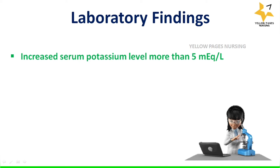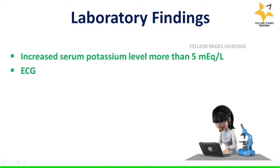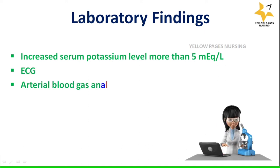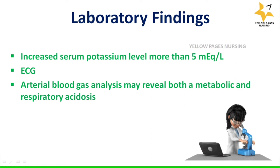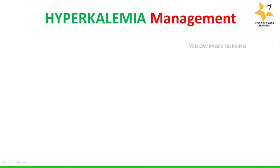Laboratory findings may show increased serum potassium level more than 5 milliequivalents per liter, ECG changes, and arterial blood gas analysis may reveal both a metabolic and a respiratory acidosis.